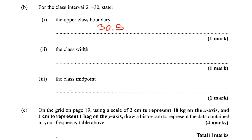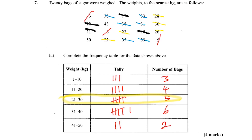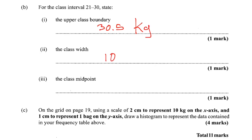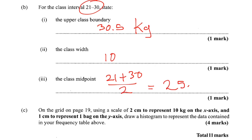The class width — you're going from 21 to 30, so that looks like 9, right? But the class width is actually based on the boundaries, so you need to add 0.5 on each side. So that's 10. The class midpoint would be: we're looking at the class interval between 21 and 30, so the midpoint is (21 + 30) ÷ 2, which gives us 25.5 kg.